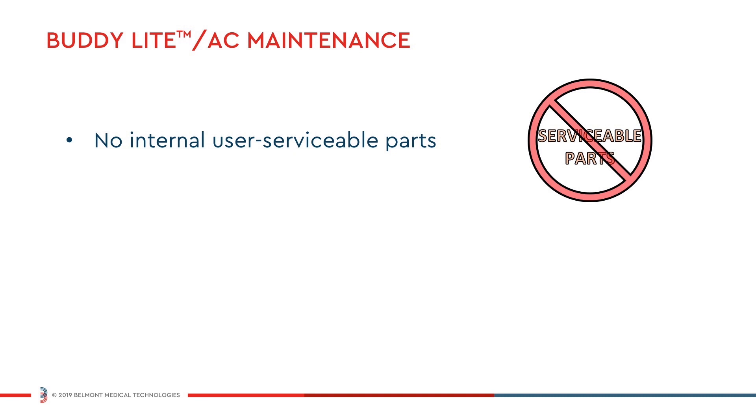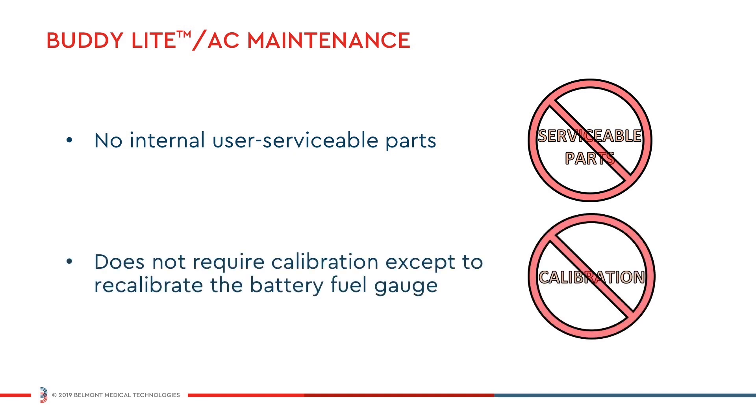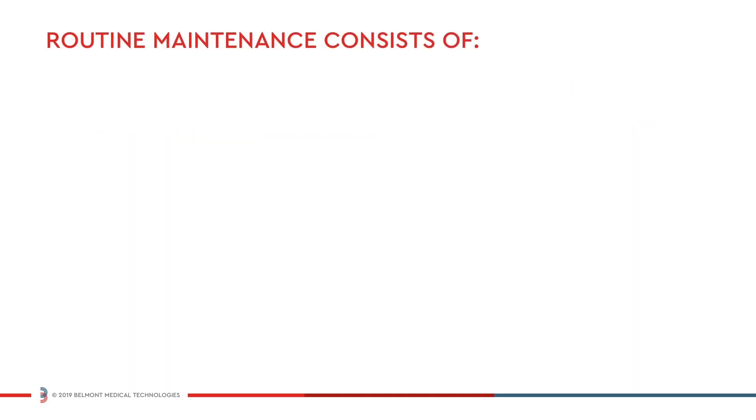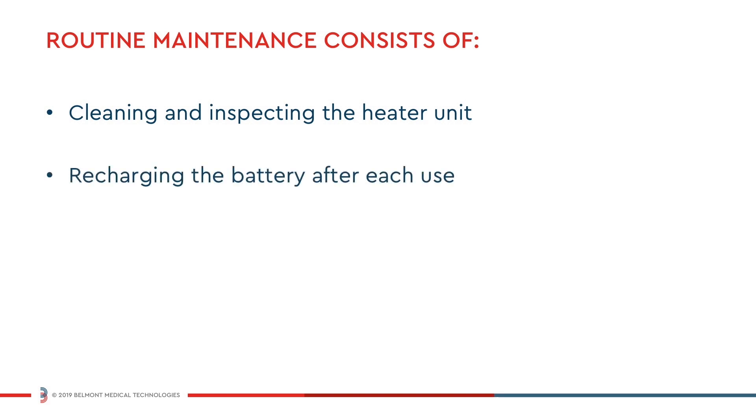The system has no internal, user-serviceable parts and does not require calibration except to recalibrate the battery fuel gauge. Routine maintenance consists of cleaning and inspecting the heater unit, recharging the battery after each use, and recalibrating the battery fuel gauge if required.